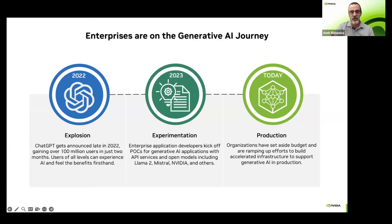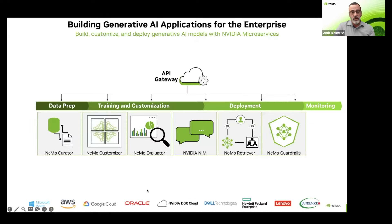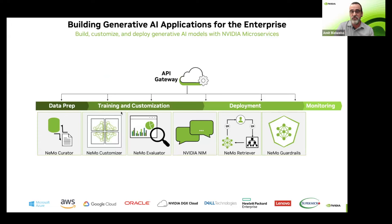We're seeing teams actually taking it to the next level and moving to production. And we know that there's a big challenge moving from experimentation and research to production. At NVIDIA, we have a full end-to-end pipeline for building generative AI applications. NVIDIA NIM is part of that as far as the deployment. If we look at the end-to-end flow, we start with data preparation, then move on to training and customizing the model, and finally to deployment and monitoring.